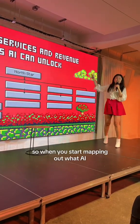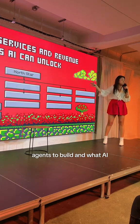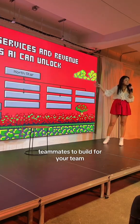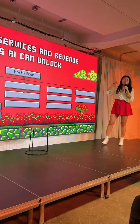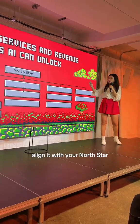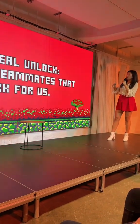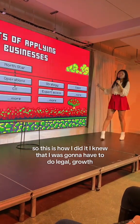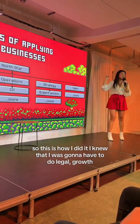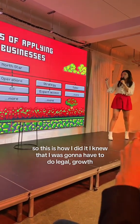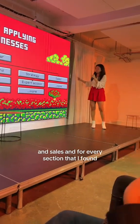So when you start mapping out what AI agents and AI teammates build for your team, align with your North Star. This is how I did it: I knew I was going to have to do legal, growth, operations, strategy, and sales.